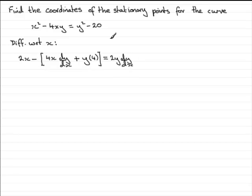And differentiating the minus 20 with respect to x is 0. So if you expand the bracket, you'll find you get 2x minus 4x dy dx, and then minus 4y equals 2y dy dx. Now, you could divide through by 2. It goes into each term, so if we divide by 2, it simplifies it.